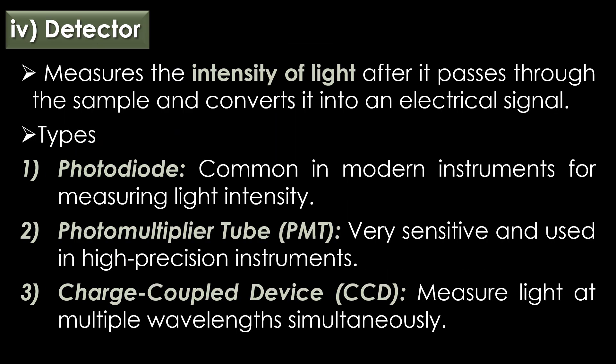Detector: the detector measures the intensity of light after it passes through the sample and converts it into an electrical signal. Three types of detectors are used: photodiode, photomultiplier tube, and charge-coupled device. The photodiode detector is common in modern instruments for measuring light intensity. The photomultiplier tube is very sensitive and used in high-precision instruments. The charge-coupled device can measure light at multiple wavelengths simultaneously.